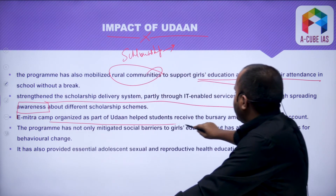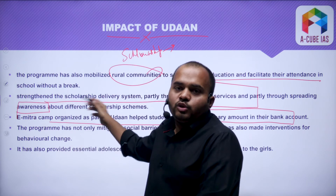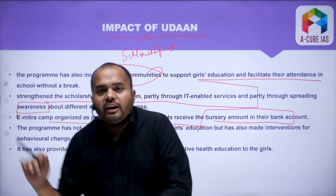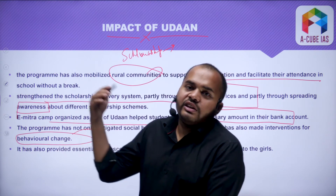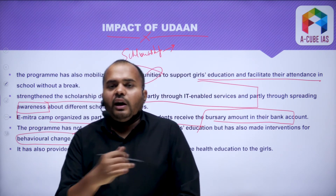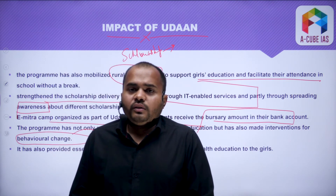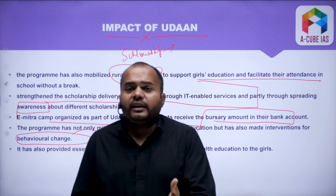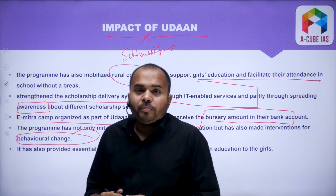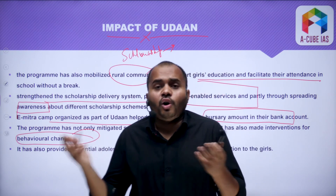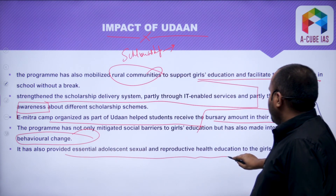The e-Mitra campaign organized as part of Udaan helps students receive the bursary amount directly in their bank accounts. This will lead to a behavioral change — and behavioral change is the most important thing. For example, Swachh Bharat Mission has been running for many years, but it has not been as speedily successful, and one of the major reasons is a lack of behavioral change. When behavioral change comes — when people develop a mindset that open defecation is wrong — then Swachh Bharat Mission will be truly a success. Udaan will also provide essential adolescent sexual and reproductive health education.